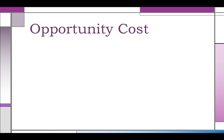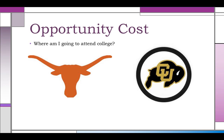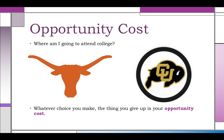Now let's talk about opportunity costs. Anytime you make a decision, it involves trade-offs. For example: am I going to attend the University of Texas or the University of Colorado? That decision is a trade-off. Once you make a decision, the next best alternative you give up is your opportunity cost. If I choose the University of Texas, my opportunity cost is not attending Colorado. This applies to personal choices and national decisions alike — such as whether to spend money on the military or rebuild infrastructure. Whichever is not chosen is the opportunity cost — a very important idea in economics.